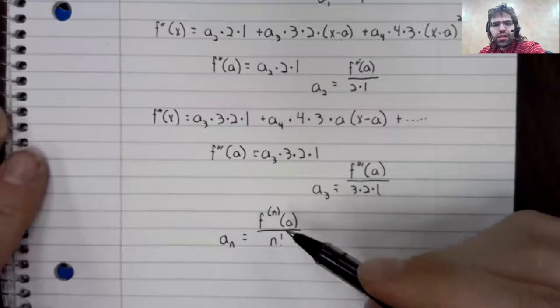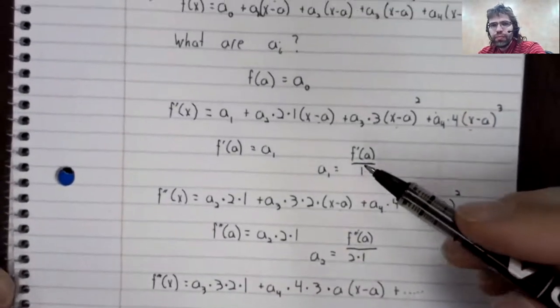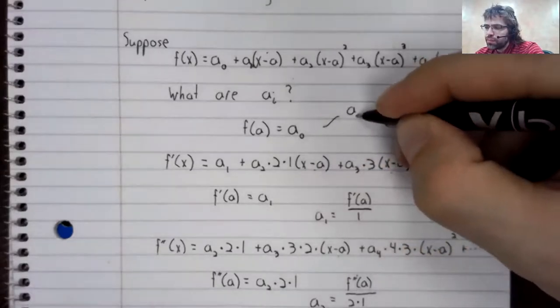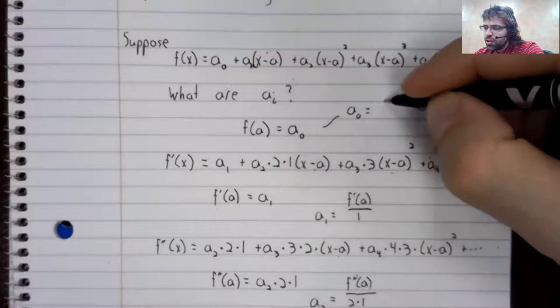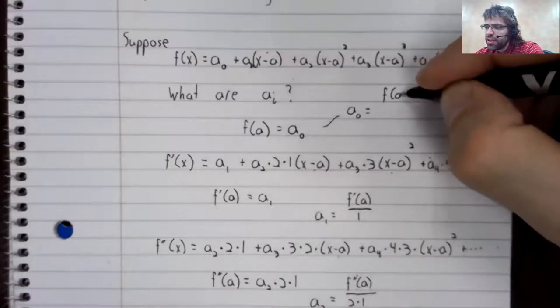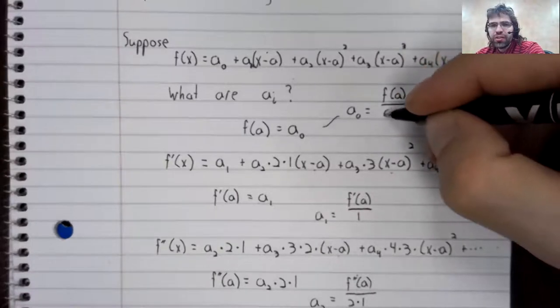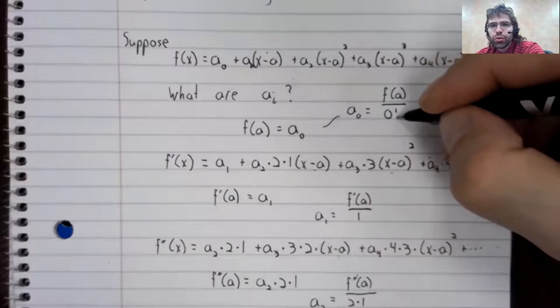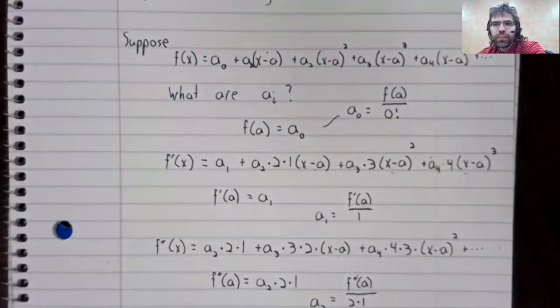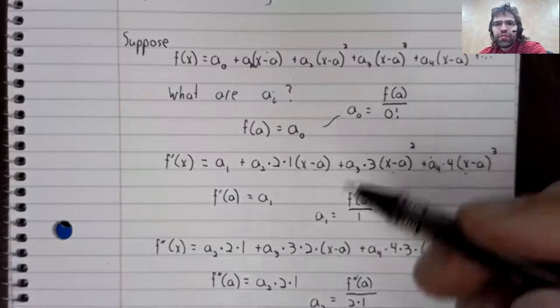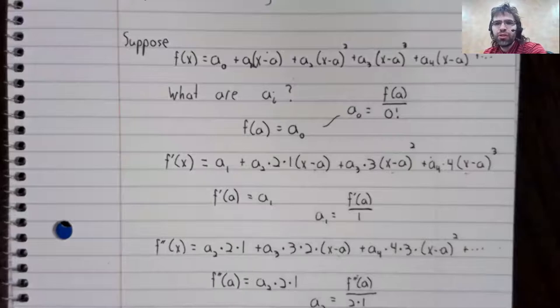This is even true for a sub zero. It has always struck me as strange that we should define zero factorial to be one. But it's the definition we need if this and many other forms involving the factorial are going to hold.